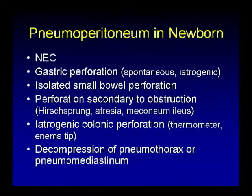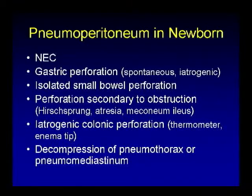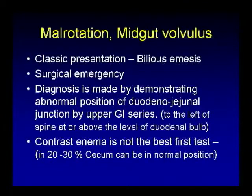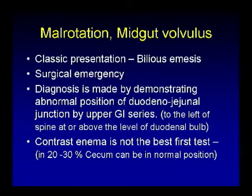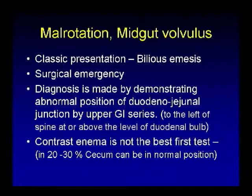Very rarely, pneumoperitoneum can result from decompression of tension pneumothorax or pneumomediastinum into the peritoneal cavity. Another important acute GI condition is malrotation and midgut volvulus. The classical clinical presentation is bilious emesis, and it is a surgical emergency. Radiologically, the diagnosis is made by demonstrating abnormal position of the duodeno-jejunal junction by upper GI series.